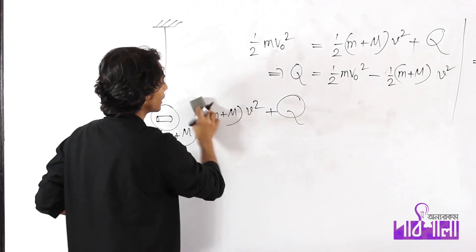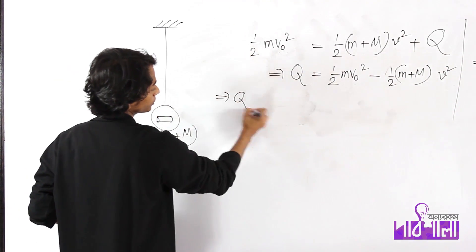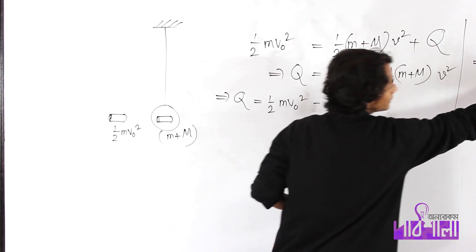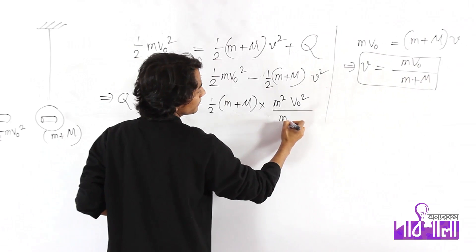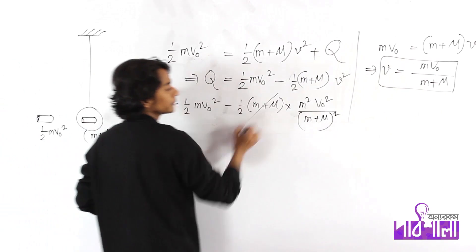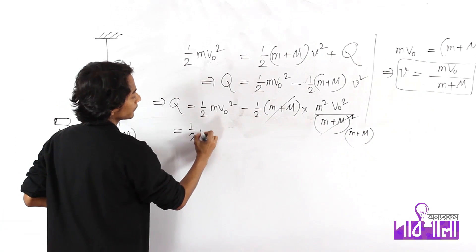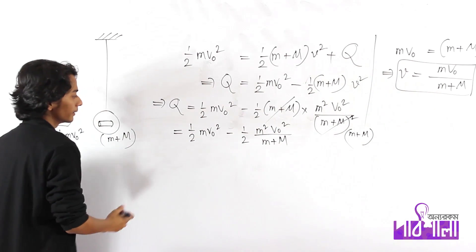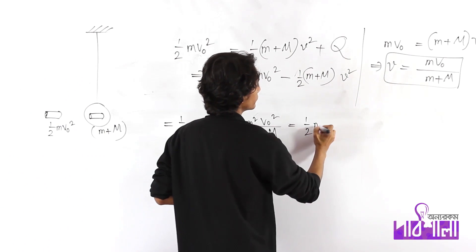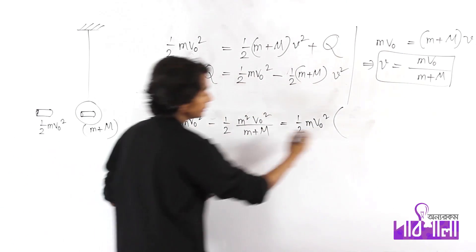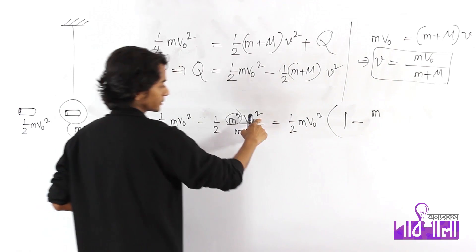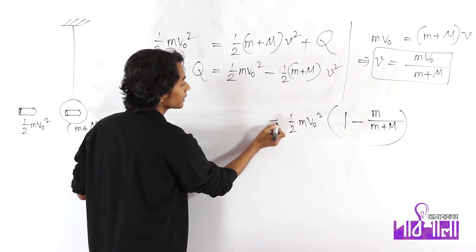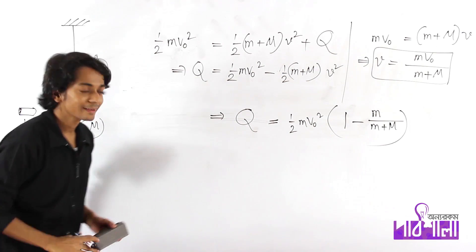We'll know it will be a little bit better. So we'll be able to see this very good example: half m v0 squared minus half m plus capital M, V squared, where V equals v0 squared divided by m plus capital M, whole squared. Half m v0 squared minus half m squared v0 squared divided by m plus M. The number of m squared is equal to 1 over M plus capital M. So this is all the values of m squared.